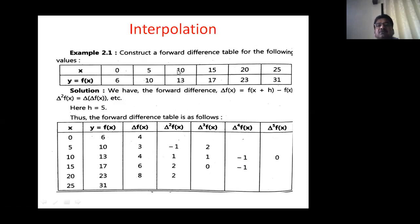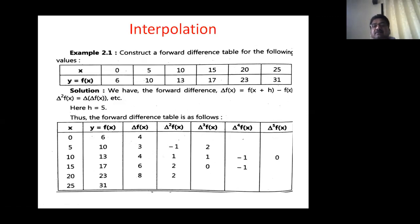This completes the forward difference table. If the question asks to construct a backward difference table instead, write the same values of x and y but replace delta with ∇ (del) in the column headings: ∇f(x), ∇²f(x), ∇³f(x), ∇⁴f(x), ∇⁵f(x). The procedure for obtaining the forward and backward difference tables is the same — just replace delta with del.